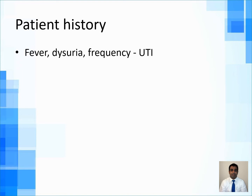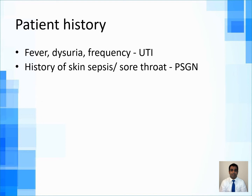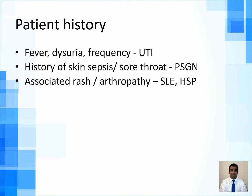What are you going to look for in your history? Fever, dysuria, and frequency indicate a urinary tract infection. A history of skin sepsis or sore throat — think of post-streptococcal glomerulonephritis. If hematuria is associated with arthropathy, a malar rash as in lupus, alopecia, or oral ulcers — think of SLE. A vasculitic rash on extensor surfaces and buttocks — think of Henoch-Schönlein purpura.